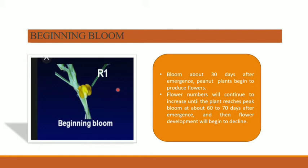Bloom begins about 30 days after emergence, and peanut plants begin to produce flowers. The flower number will continue to increase until the plant reaches peak bloom about 60 to 70 days after emergence, and then flower development will begin to decline. So the important point is that 60 to 70 days is the peak blooming stage after emergence.